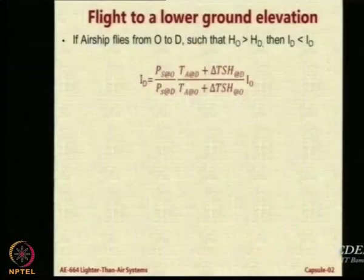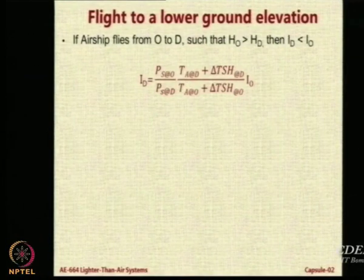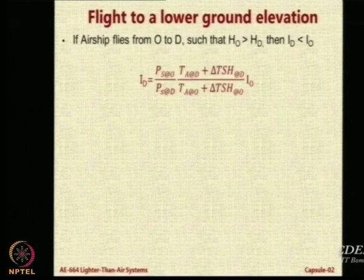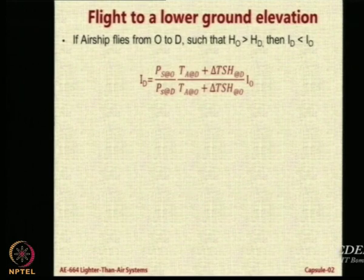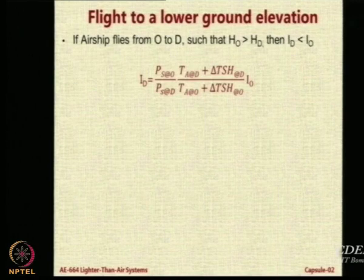If an airship flies from an origin O to a destination D such that the height of the origin is more than the height of the destination, then the inflation fraction at destination, Id, is going to be lower than the fraction at origin. The value of Id can be obtained by simply looking at the ratio of pressures and temperatures plus the superheat. This is a familiar formula, with PS at O denoting ambient pressure at origin.